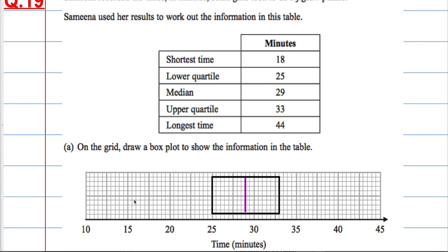The shortest time is 18. 15, 16, 17, 18. So that's going to go there. And the longest time is 44. 40, 41, 42, 43, 44. Right there. So once we've drawn that in, get the whiskers on.